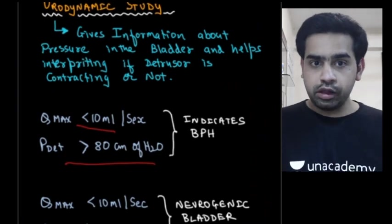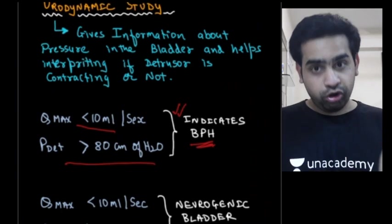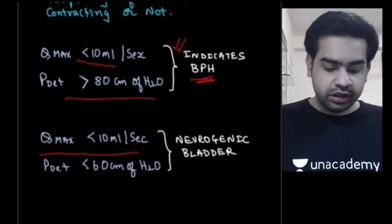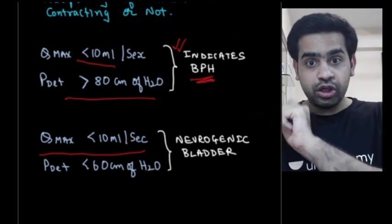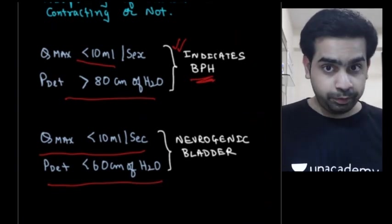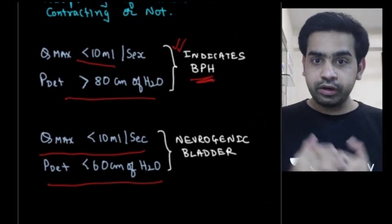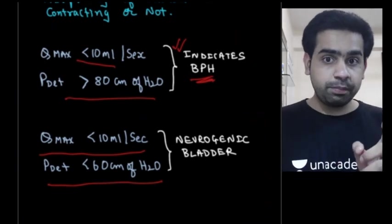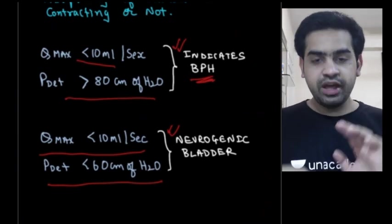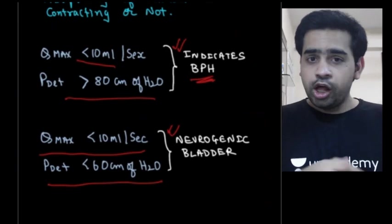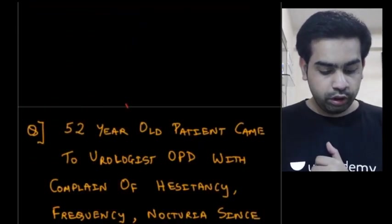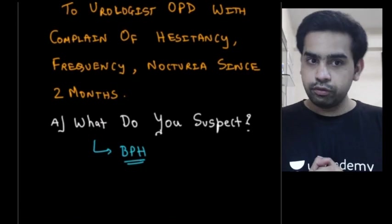If Q-max is less than 10 ml per second but the P-detrusor (pressure inside the bladder) is more than 80 cm of water, it means the detrusor is functioning properly but there is an obstruction — indicating BPH. However, if Q-max is less than 10 ml per second and P-detrusor is less than 60 cm of water, the bladder is not generating enough pressure — indicating neurogenic bladder.